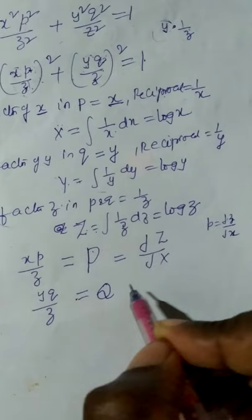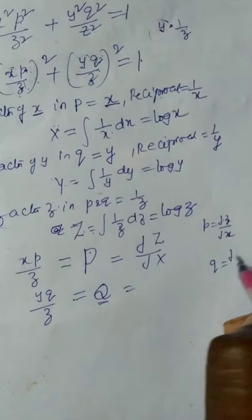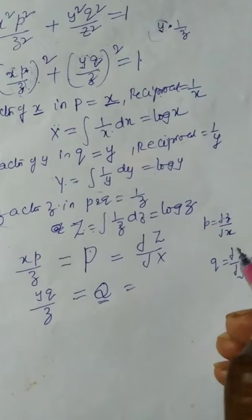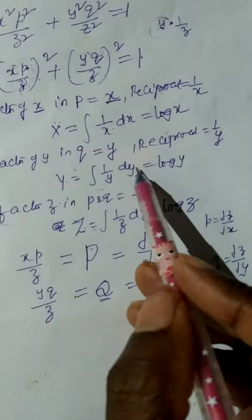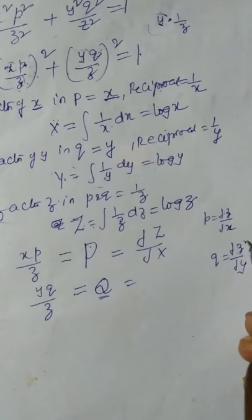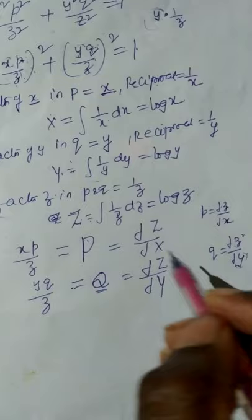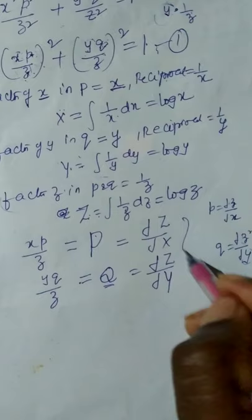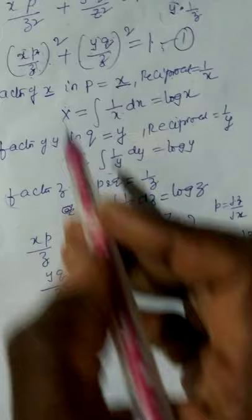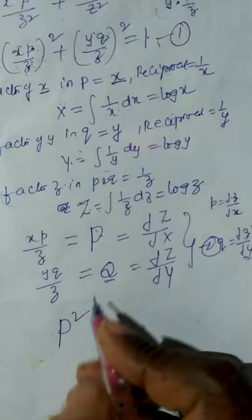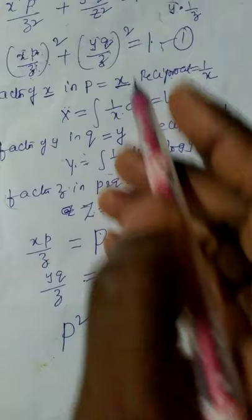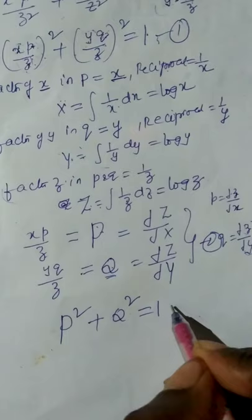Capital Q = ∂Z/∂Y in general. In this problem, we replace small z by capital Z and small y by capital Y. If we substitute xp/z = P and yq/z = Q into equation 1, we get P² + Q² = 1. This is equation 3 — the partial differential equation containing only P and Q, not x, y, or z. Hence it belongs to standard form 1.